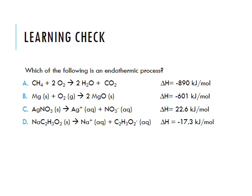As a learning check — which of the following is an endothermic process? The answer is C, silver nitrate forming silver ion and nitrate ion. That is an endothermic process because the delta H value is positive. All the others are negative values, so they're exothermic. For example, reaction A has methane burning with oxygen to form carbon dioxide and water — that's a combustion reaction that gives off energy.